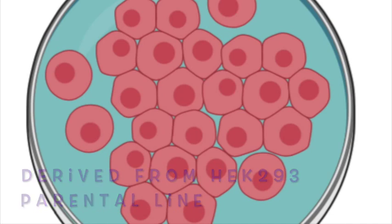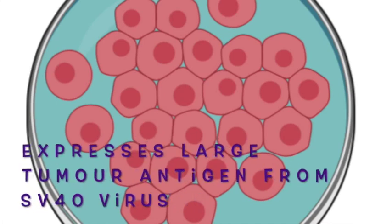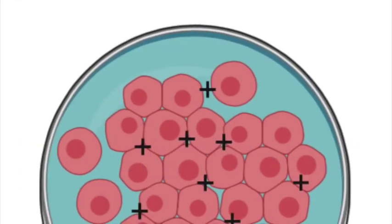The T means that it expresses the large T or tumor antigen, which is important for replicating plasmids containing an SV40 origin of replication. So when you get your lentiviral plasmids, they will have an SV40 origin of replication, and to have these replicated in a cell to high copy number, you want to use a cell line that expresses the SV40 large T antigen, and HEK293T cells do just that.